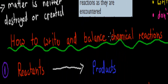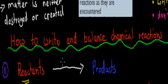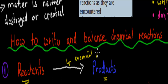In this video we are going to cover how to write chemical equations and what to focus on. With a chemical equation you need to make sure you have reactants on the left hand side and your products on the right hand side. You also have an arrow in the middle, which indicates that a chemical reaction has occurred.